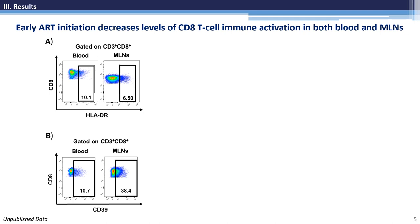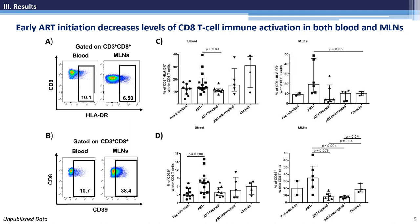We first evaluated the effect of very early ART initiation on CD8 T cell immune activation. For that, we evaluated the expression of the classical activation marker HLA-DR and the expression of an alternative marker of activation, the ectonucleotidase CD39. As expected, untreated SIV infection resulted in increased levels of immune activation assessed by both HLA-DR and CD39 in both mesenteric lymph nodes and blood, and early ART initiation decreased them considerably in both compartments.